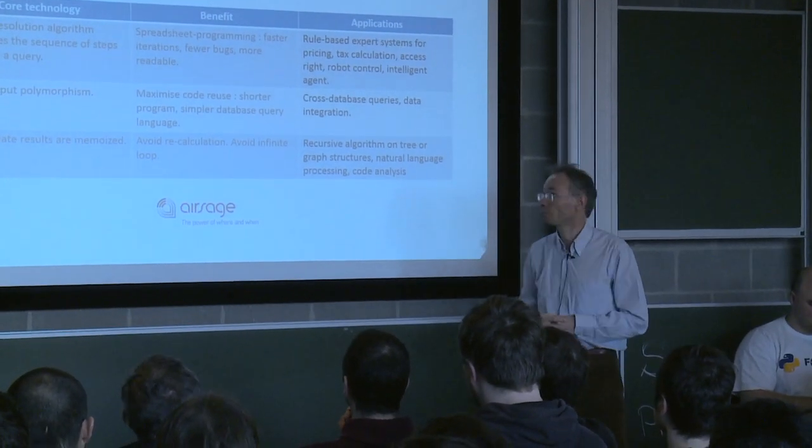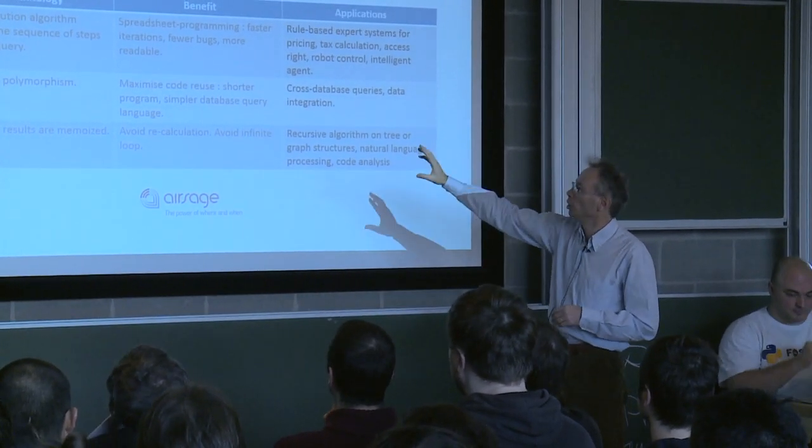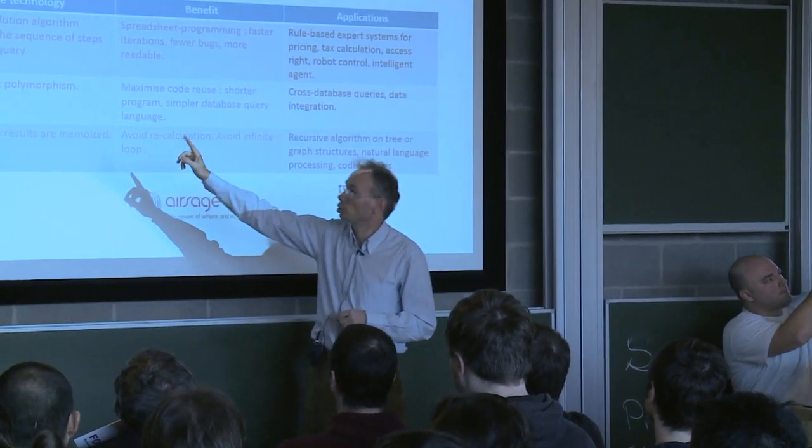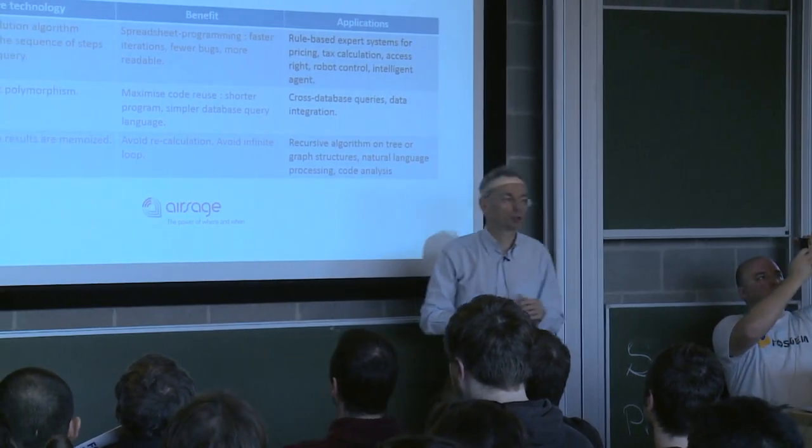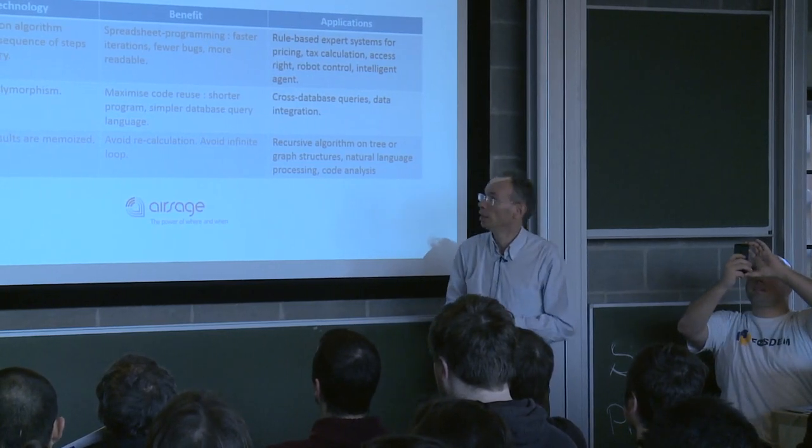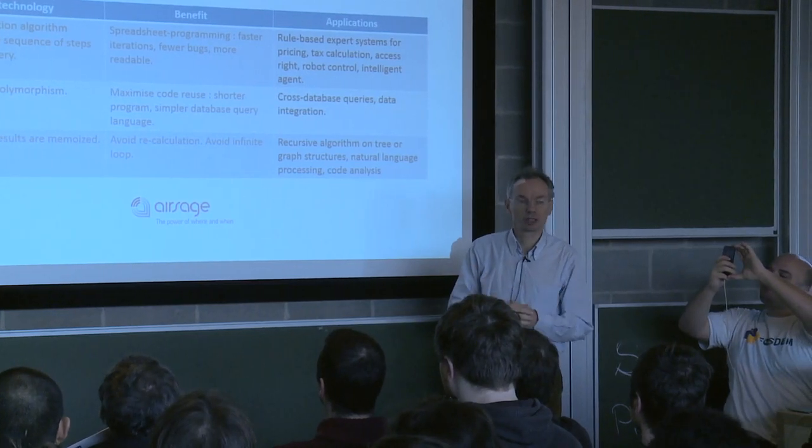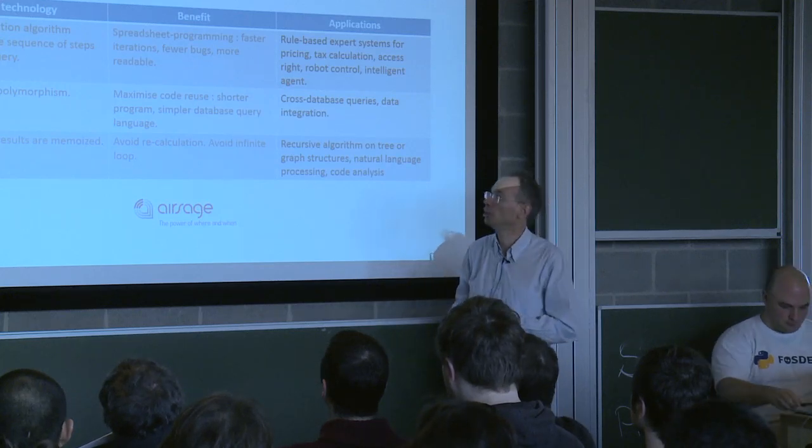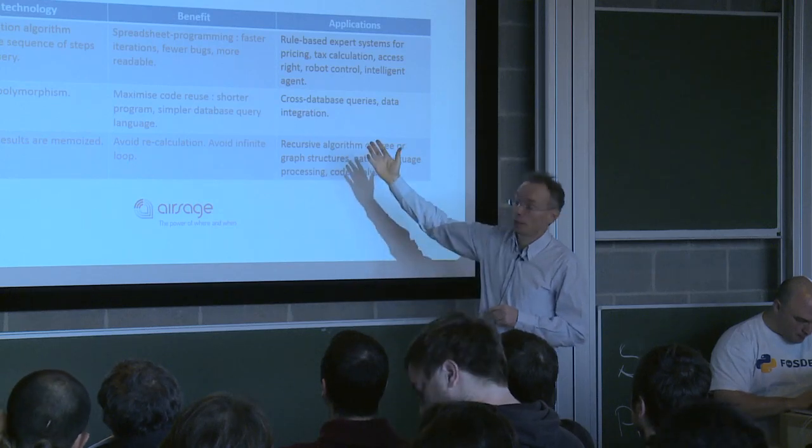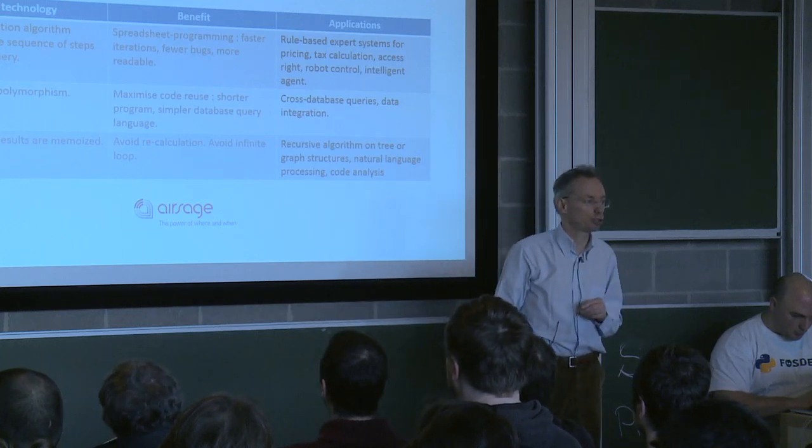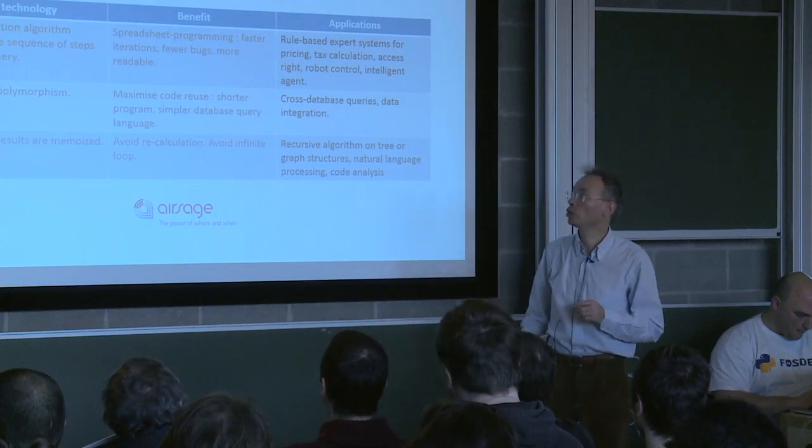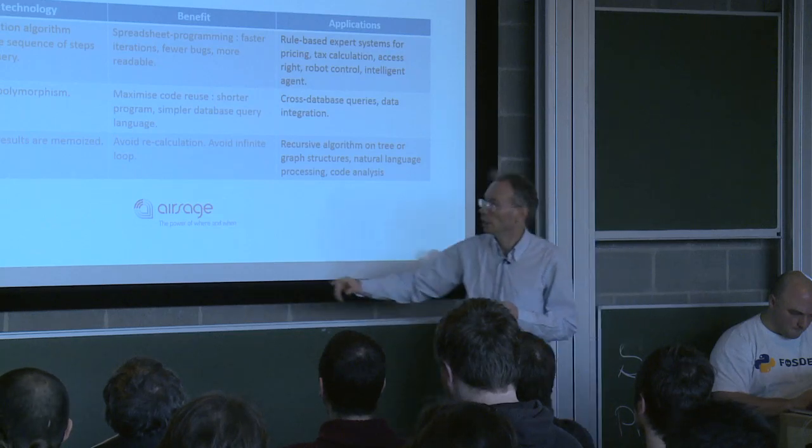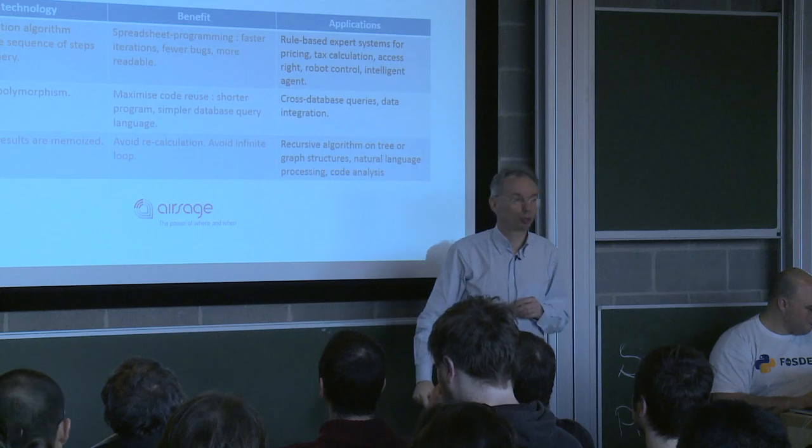So, applications. This table shows the core technology in the library, the benefit that they bring, and typical applications for it. There's an intelligent resolution algorithm to resolve the queries by looking at all the logic clauses. And so you don't need to determine the sequence of steps to do it. That brings benefits like a spreadsheet type of programming, very interactive, very quick type of programming. And that can be used to develop expert systems for many types of applications in ERP systems, like a pricing engine, but also in intelligent agents, or robot controls, etc.